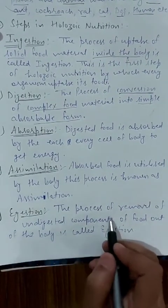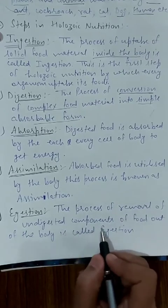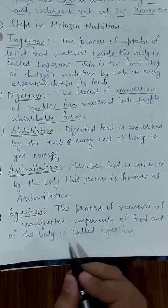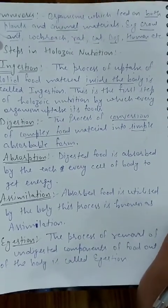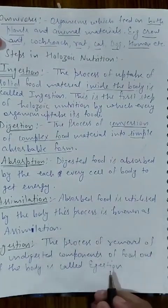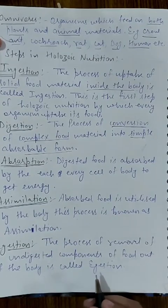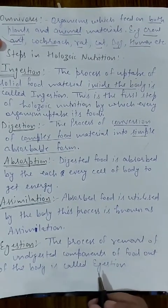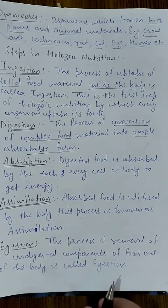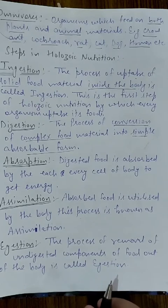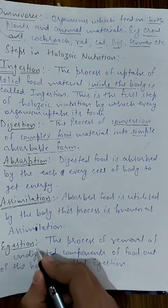The last step is egestion. 'E' means exit. It is the process of removal of undigested components of food out of the body. Not all food material taken in is digestible — some components remain undigested and the body cannot break them down completely. Those undigested components are removed from the body through the anus or the facilitating organ. This process is called egestion.